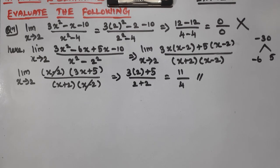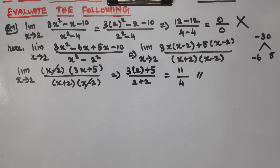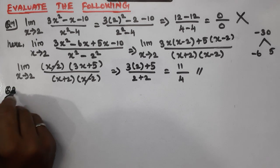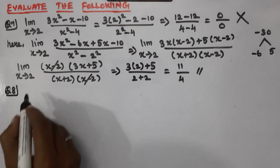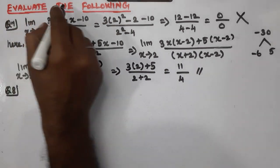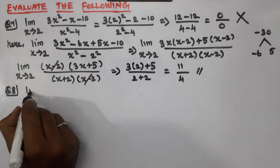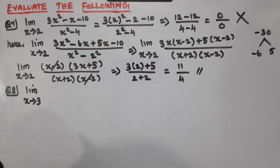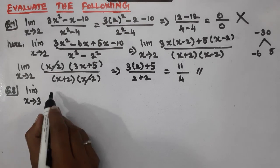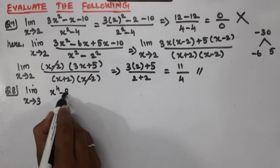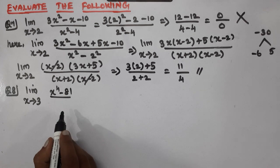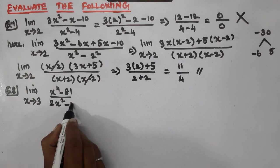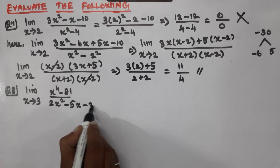Question number 8 is next. Evaluate the limit as x tends to 3 of x to the power 4 minus 81, divided by 2x squared minus 5x minus 3.